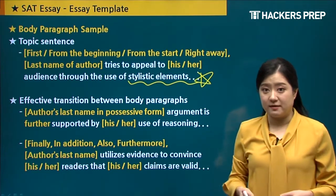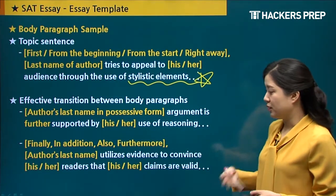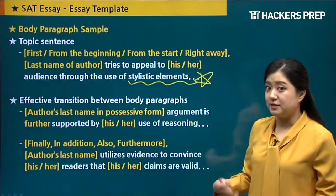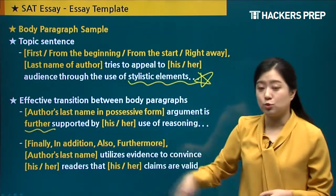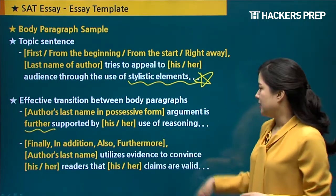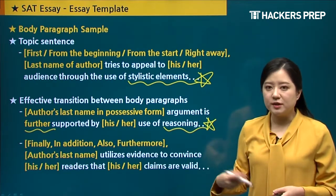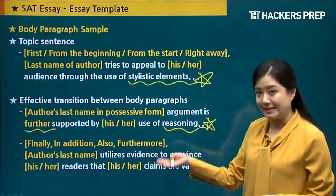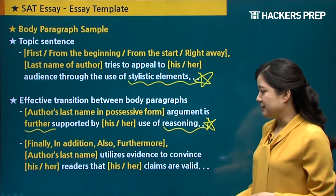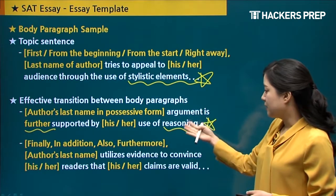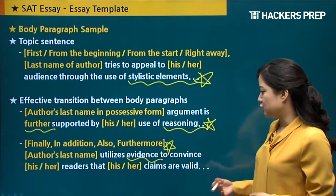For your second and third body paragraphs, make sure you have effective transitions to signal to the reader which paragraph they're in. For the second body paragraph you might write: 'The author's argument is further supported by his or her use of reasoning' — the word 'further' signals you already stated something before. For example, if you used stylistic elements in body one, you'd talk about reasoning in body two. For the third body paragraph, use words like 'finally' or 'lastly,' or if you have a fourth paragraph, words like 'in addition,' 'also,' or 'furthermore.' For instance: 'The author utilizes evidence to convince his or her readers that his or her claims are valid.'